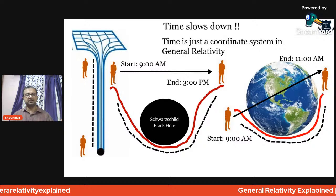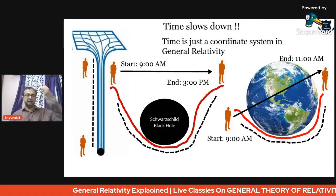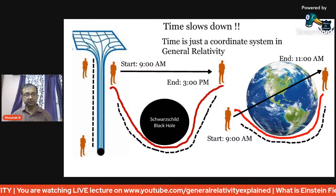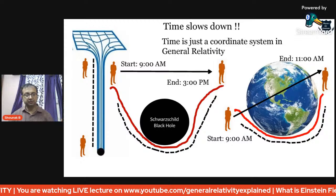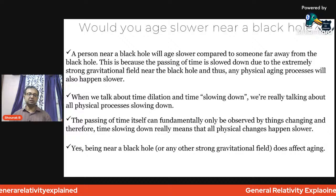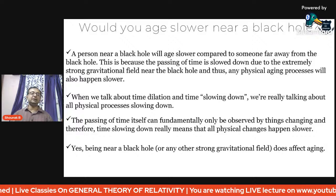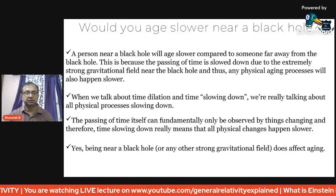A nice diagram shows that if you start at 9 AM and travel through a Schwarzschild black hole radius — a symmetrical, non-charged, non-rotating black hole — you would reach the other side at 3 o'clock, while on Earth with less curvature you might arrive by 11 AM. A person near a black hole ages slower compared to someone far away, because the passage of time slows down due to the extremely strong gravitational field — this is gravitational time dilation.